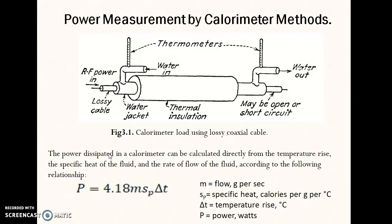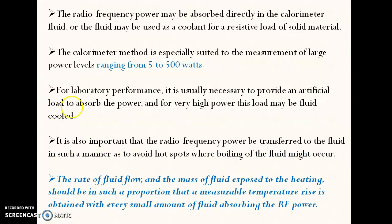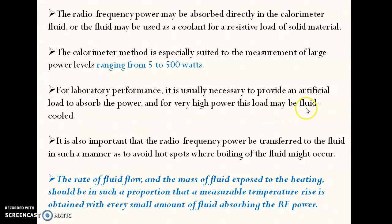If you can measure the rise of temperature due to that heat, then we can measure the power accordingly. The calorimeter method is especially suited for the measurement of large power levels, that is 5 to 500 watts. The basic approach is to use a fluid which can absorb the heat of the RF power, and then we can measure the temperature rise of that fluid. Another way is to use a load that will absorb the power, and then the load can be cooled using that fluid. The basic principle is that we are measuring the temperature change due to the RF power absorption.